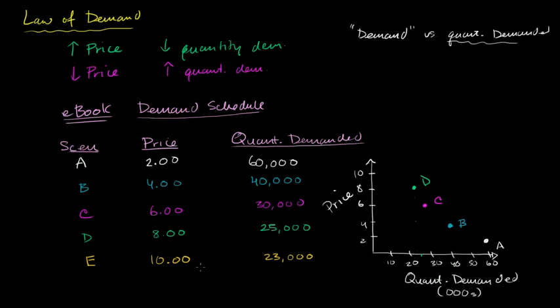And then finally, scenario E, $10, 23,000 units. So it might be something like that. That is scenario E.